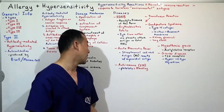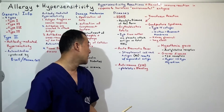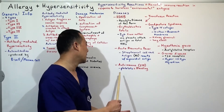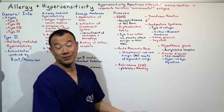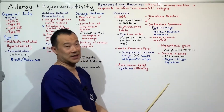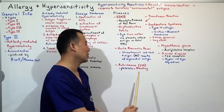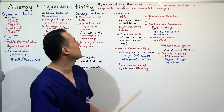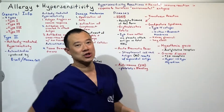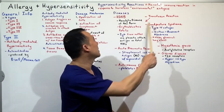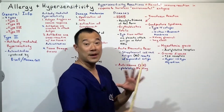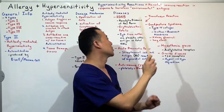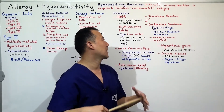Autoimmune ITP is where antibodies inhibit platelets. If you don't have platelets, you start bleeding — look it up, it's quite interesting. Transfusion reactions involve a similar mechanism to HDNB.